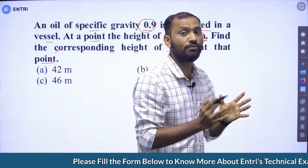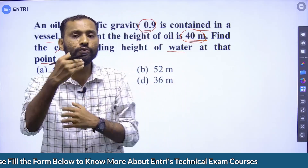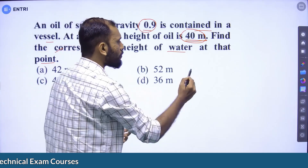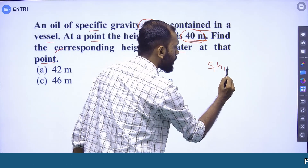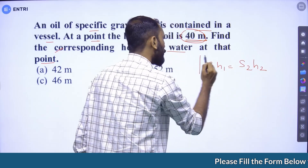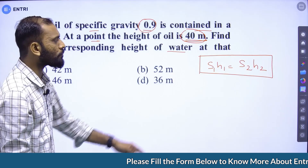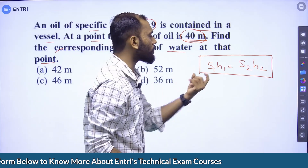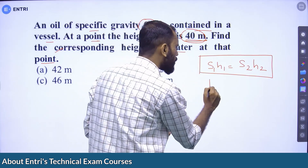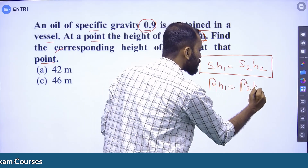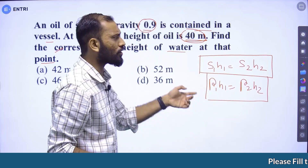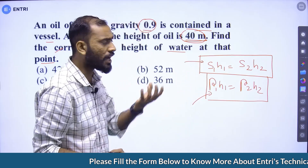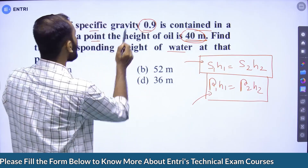We learn the concept of conversion of one fluid column to another. The equation is S1 × H1 = S2 × H2, where S is specific gravity and H is the corresponding height. In terms of density: rho1 × H1 = rho2 × H2. Since the question gives specific gravity, we use S1 × H1 = S2 × H2.